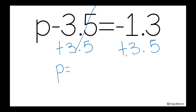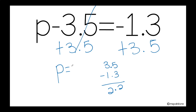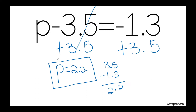Different signs — I subtract. When subtracting decimal numbers, I need to have the greatest number on top. So I will have 3 and 5 tenths on top, minus 1 and 3 tenths. 5 minus 3 is 2. Bring down the decimal point. 3 minus 1 is 2. My final answer will be positive 2 and 2 tenths, because 3 and 5 tenths has the greatest absolute value and is positive. So this will be your final answer.